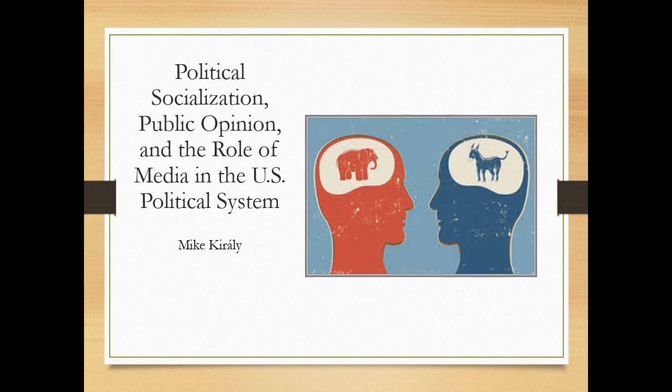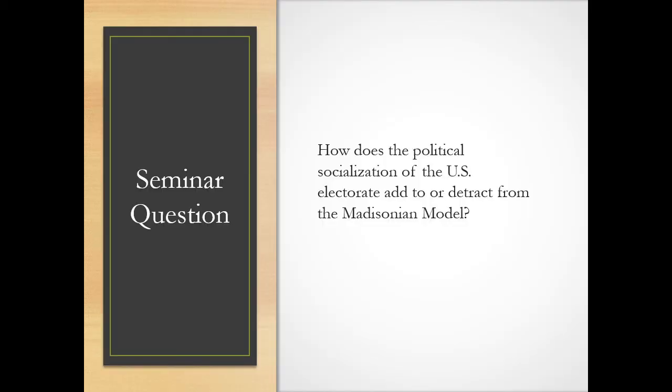This is our seminar question for this evening: How does the political socialization of the U.S. electorate add to or detract from the Madisonian model? I would argue this is pretty straightforward — that the political socialization of the electorate is both going to add to and detract from. This is going to be not if/or, but a how and why. Your thesis statement would look something like: the political socialization of the U.S. electorate adds to and detracts from the Madisonian model.